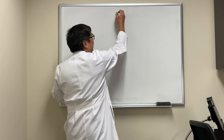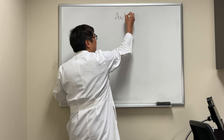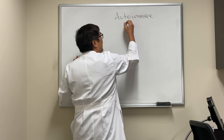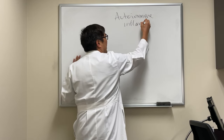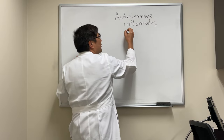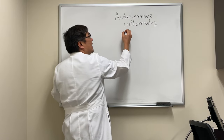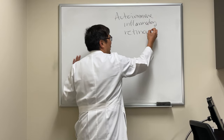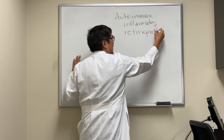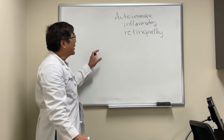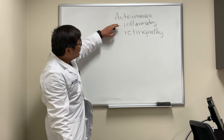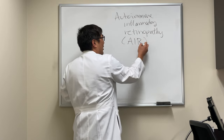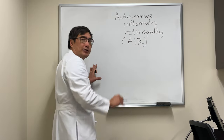Today we're going to be talking about autoimmune retinopathies. These are autoimmune inflammatory optic neuropathies that are presumed to be antibody mediated. It can be a retinopathy, an optic neuropathy, or both. When it's an autoimmune inflammatory retinopathy, that's called AIR — autoimmune inflammatory retinopathy.